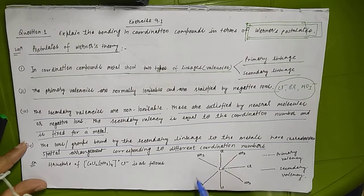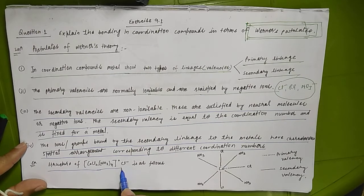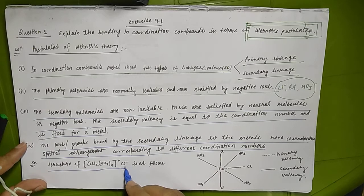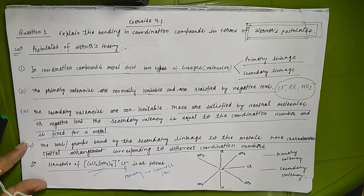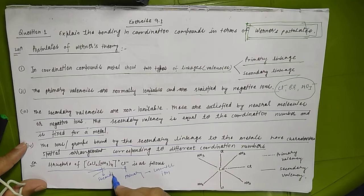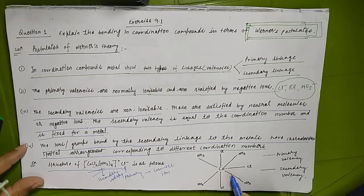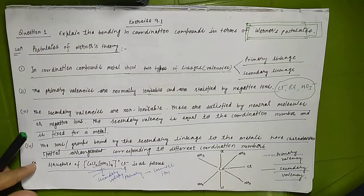For example, in CoCl₂(NH₃)₄ with Cl₅ outside, whatever is outside the sphere represents the primary valency — known as the counter ion. Whatever is inside the sphere is not ionizable and represents the secondary valency, satisfied by neutral molecules. The dotted lines represent primary valency and solid lines represent secondary valency.